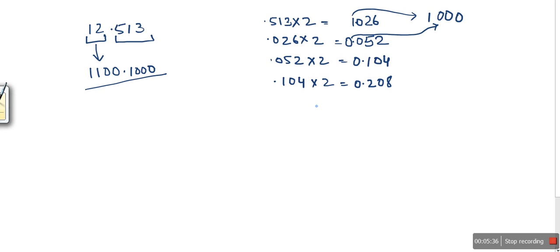So the sign bit, what will be the sign bit? The sign bit will be zero. Now the next thing is we want to find out the exponent.